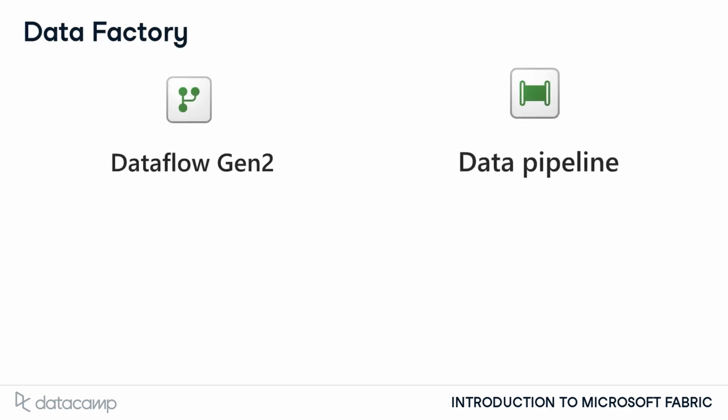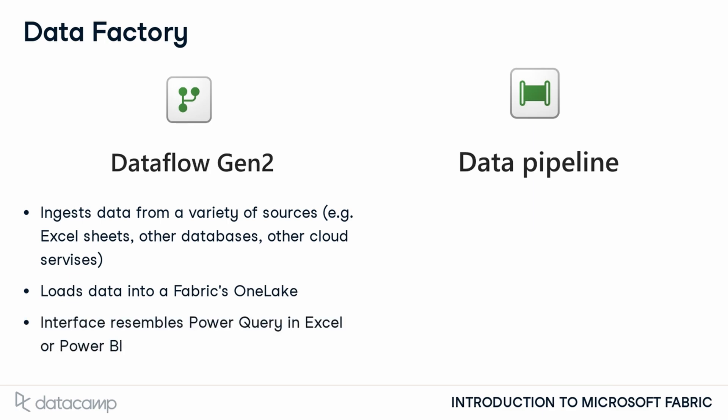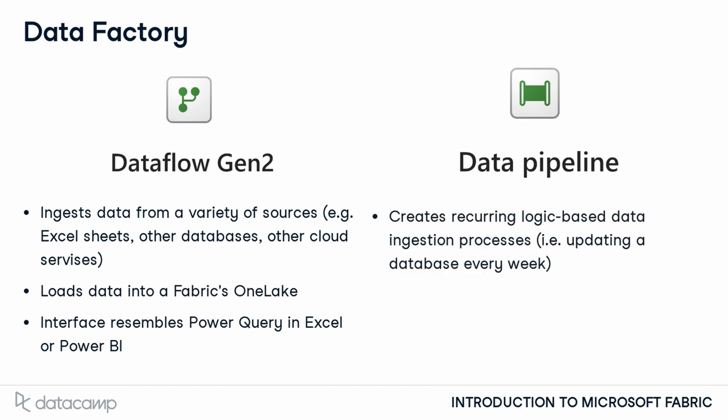Let's begin by exploring tools within Data Factory. The primary tools here are Data Flow Gen 2 and Data Pipeline. Data Flow Gen 2 ingests data from various sources into the Fabric ecosystem. You can select specific data from sources like a Snowflake database and load it into Fabric's OneLake through a storage solution such as a lake house or a warehouse. Data Flow's interface is user-friendly, resembling Power Query in Excel or Power BI, making it accessible to those unfamiliar with programming languages.